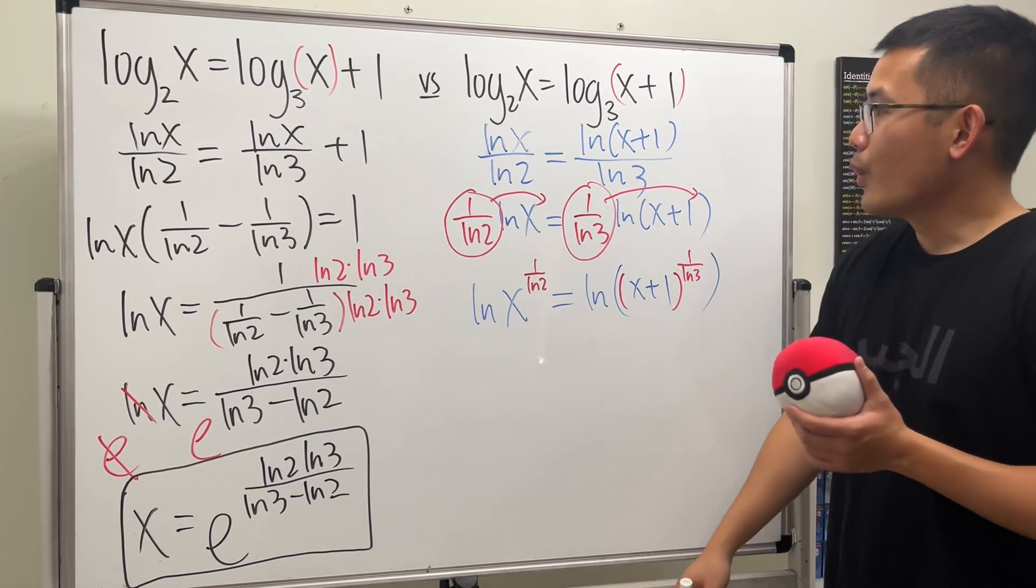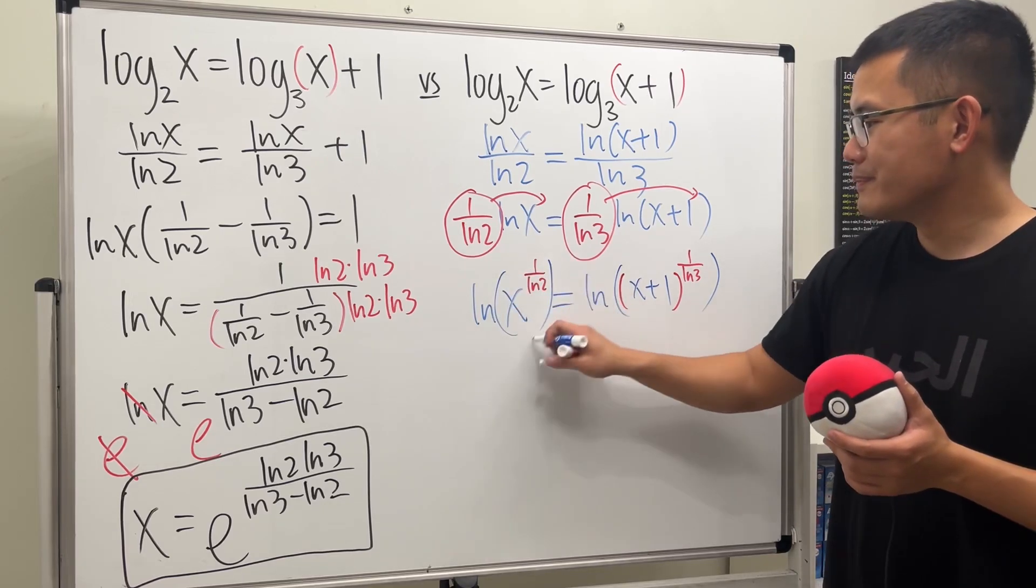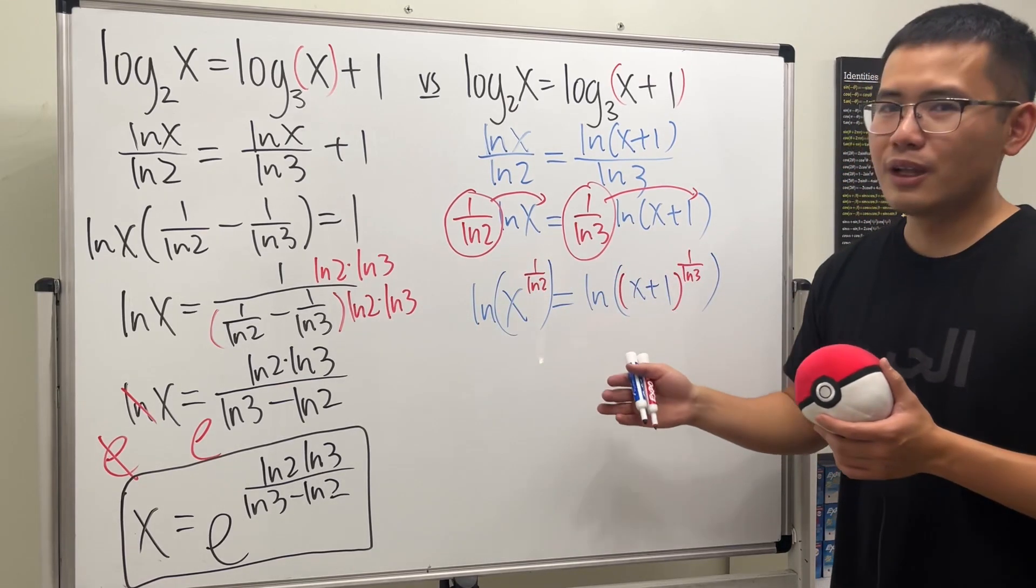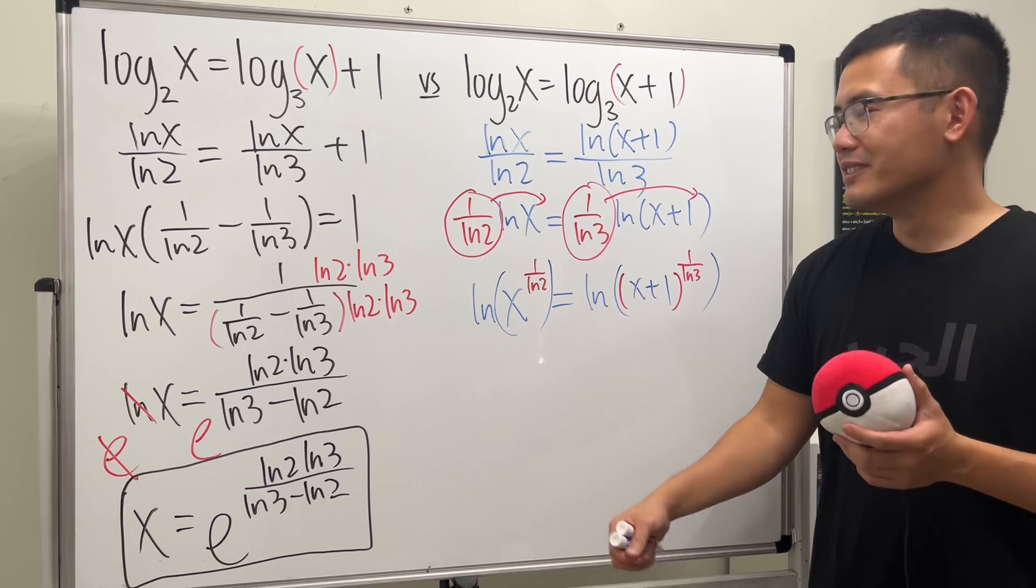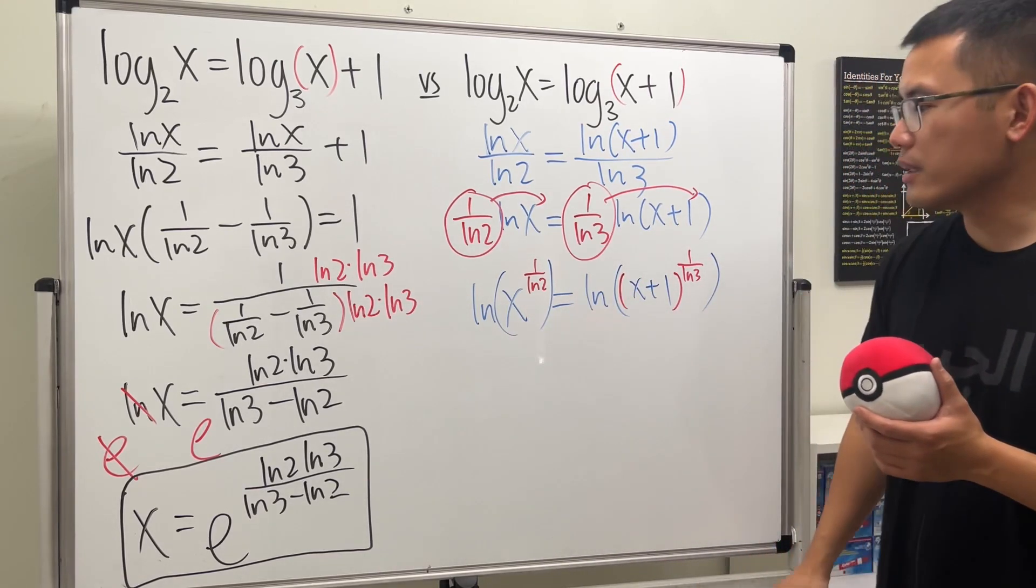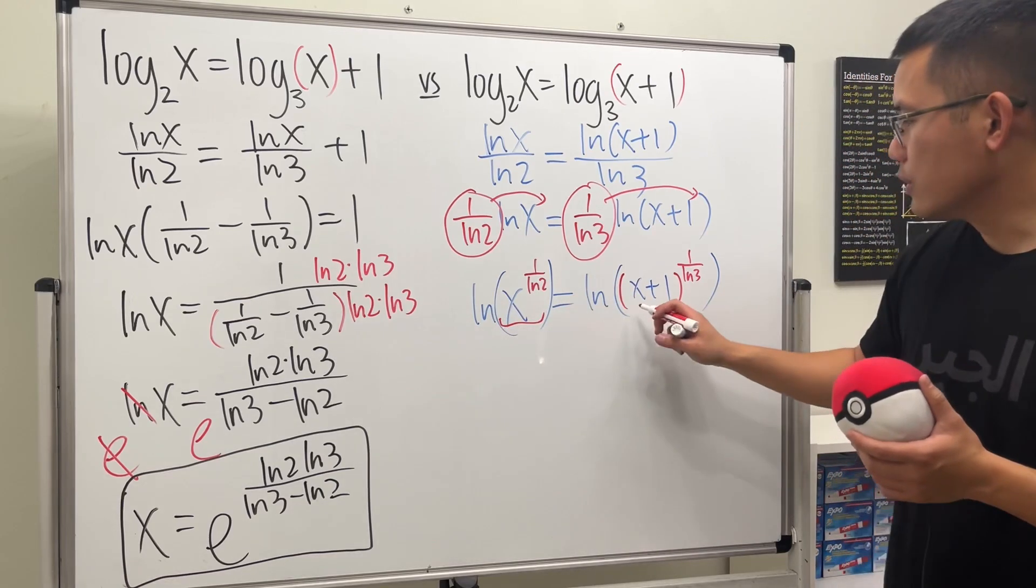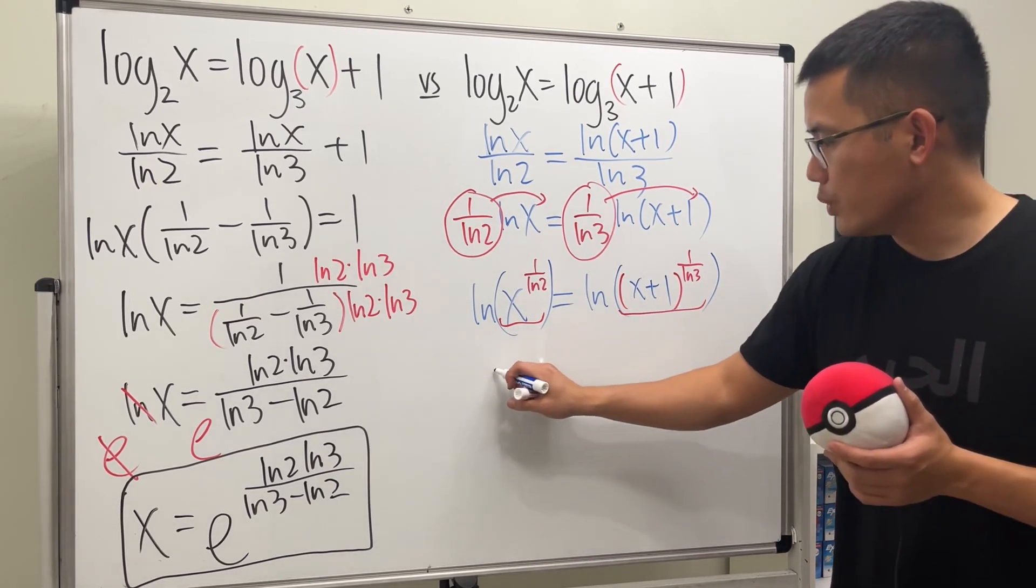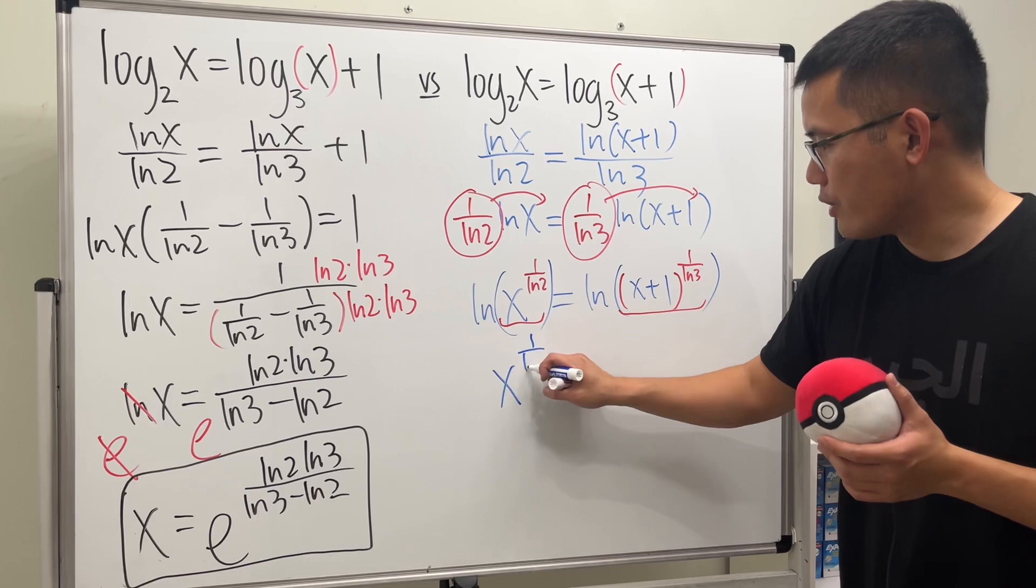Now what? Well, yes, we have natural log being equal to a natural log, and this is just about real numbers. So that means the input has to be the same, because log is a one-to-one function. So we can just say this has to be the same as that. And then we get x to the 1 over ln 2 power equal to x plus 1 to the 1 over ln 3 power.